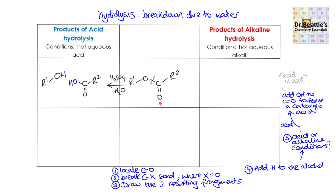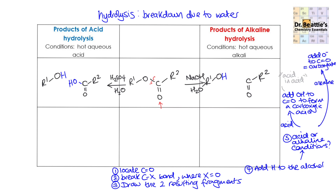Under alkaline conditions, steps one and two are exactly the same: locate the carbonyl group in the ester, break the C-X bond, and draw the two resulting fragments. You add the hydrogen to the alcohol fragment as before. But because it's under alkaline conditions, the carbonyl-containing fragment is different — you add just an O⁻, not an OH. This forms the carboxylate. The sodium hydroxide is a source of hydroxide ions, giving you an O⁻ as the product. The reason you get a carboxylate is that under alkaline conditions, the hydrogen of the carboxylic acid is deprotonated.